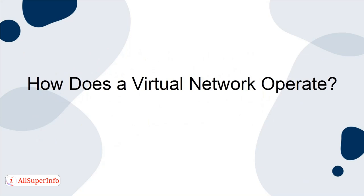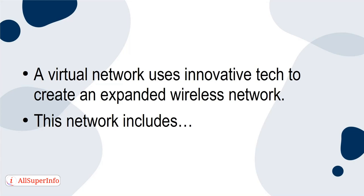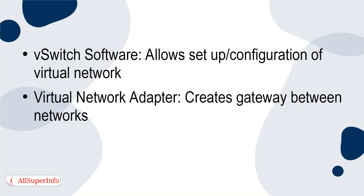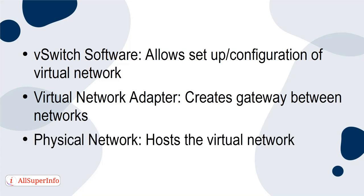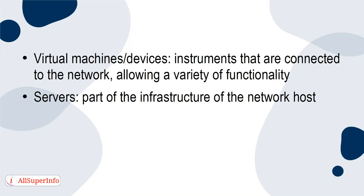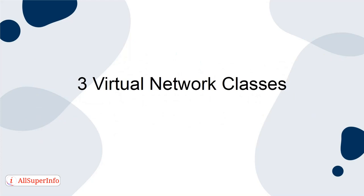How does a virtual network operate? A virtual network uses innovative tech to create an expanded wireless network. This network includes: vSwitch software, which allows setup and configuration of a virtual network; a virtual network adapter, which creates a gateway between networks; a physical network, which hosts the virtual network; and virtual machines, which are instruments connected to the network allowing a variety of functionality. Servers are also part of the infrastructure of the network host.